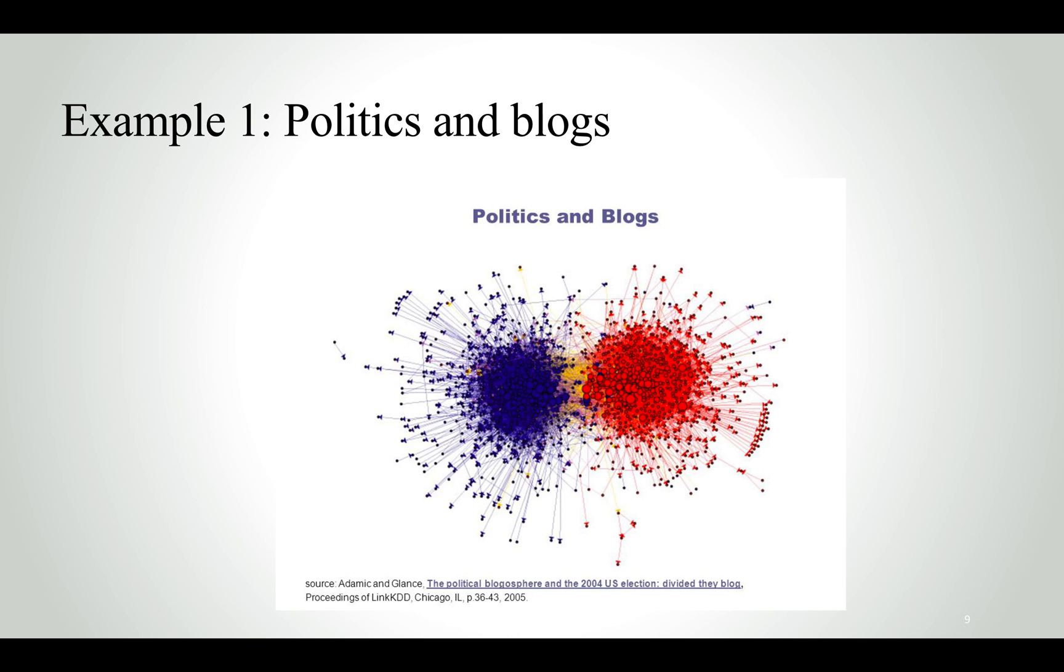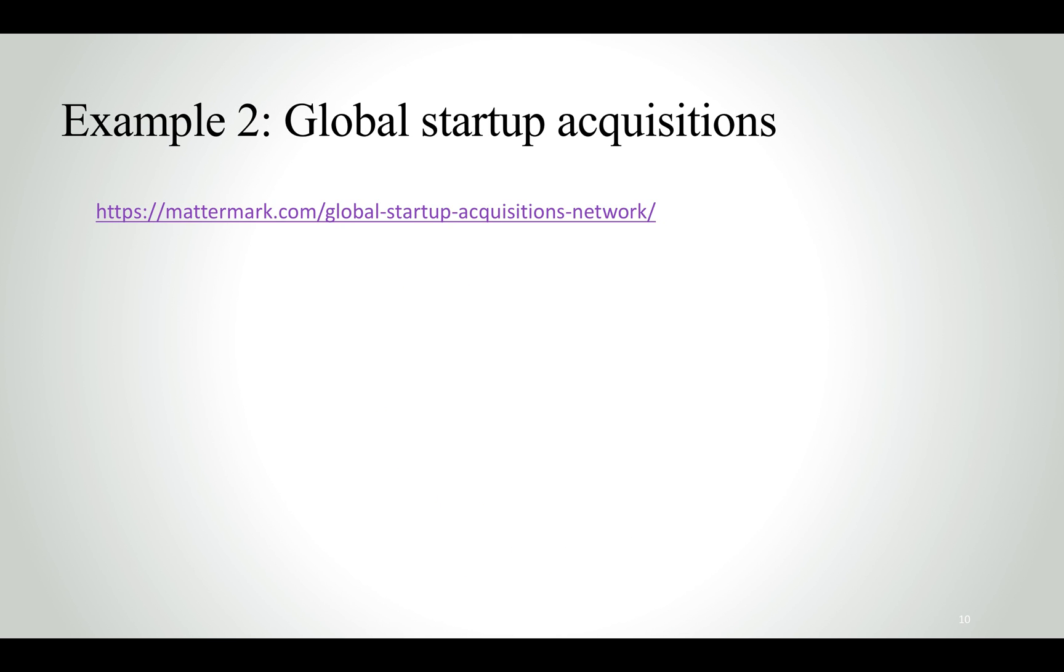This is an example of network analysis conducted on politics and blogs. You can see that the researchers in this case crawled various blogs around the web and they clustered them according to their political affiliation. Democrats on one side, Republicans on the other side and neutral blogs in the middle. That's a cool example.